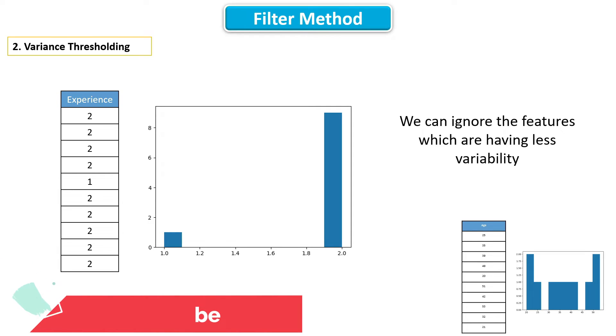So simply we can ignore the features which are having less variability. This is the idea behind variance thresholding.